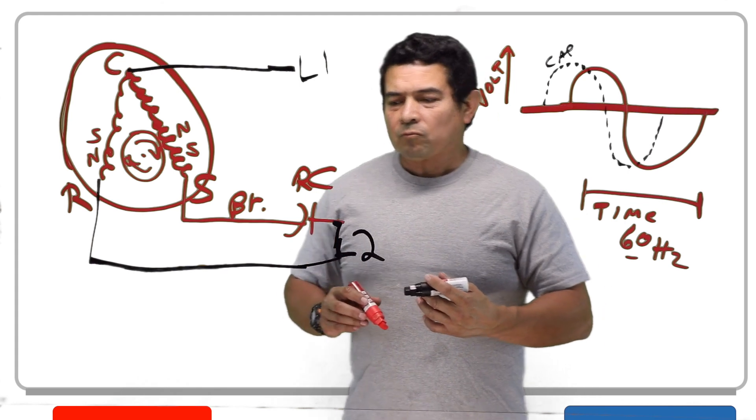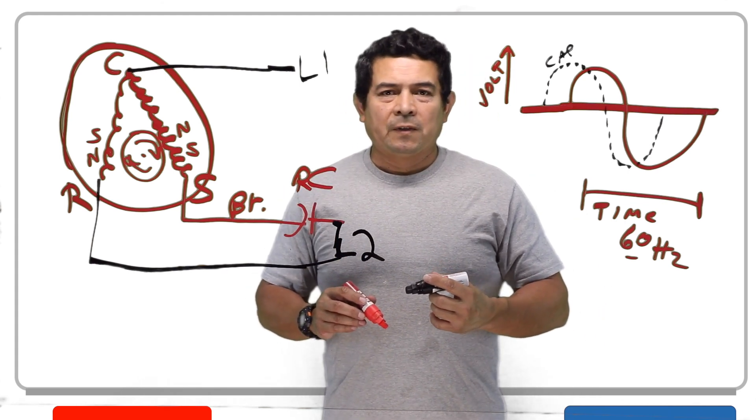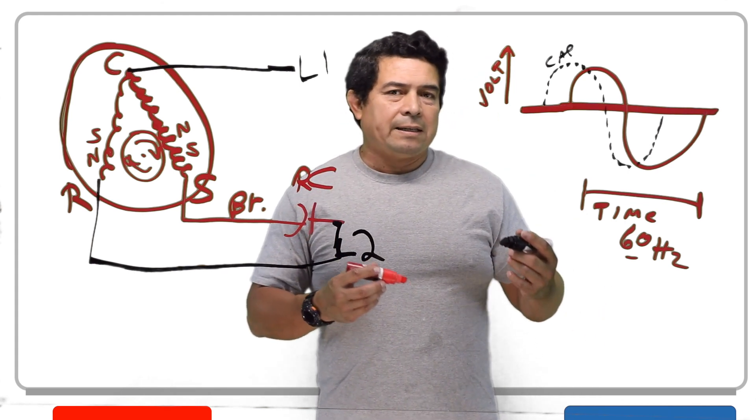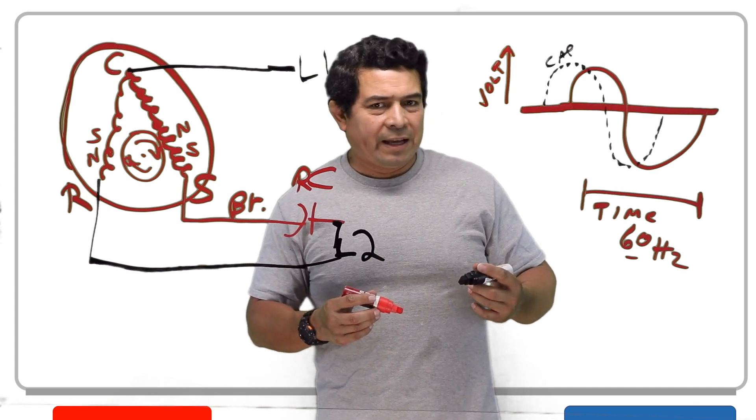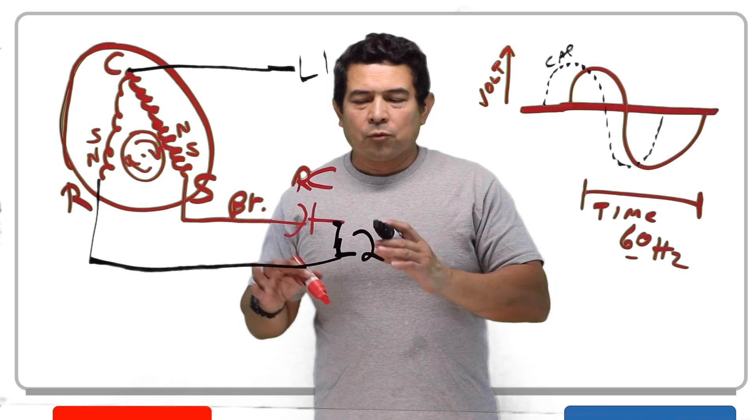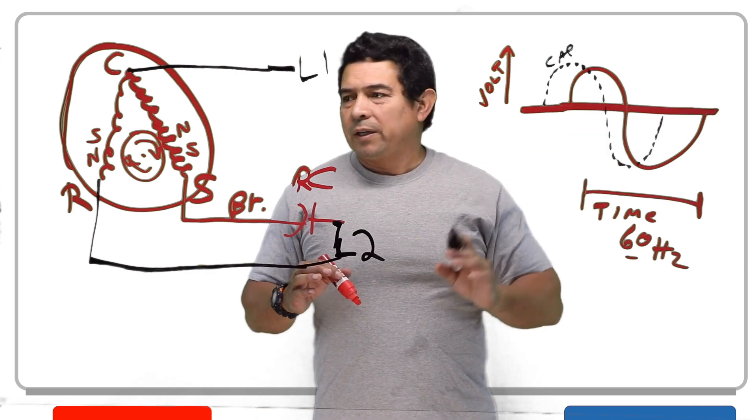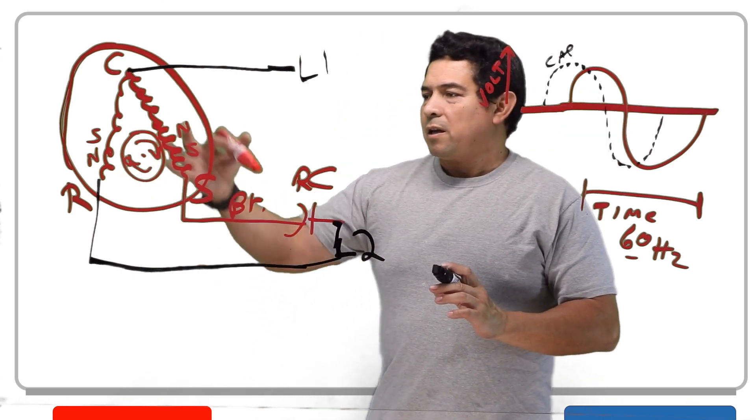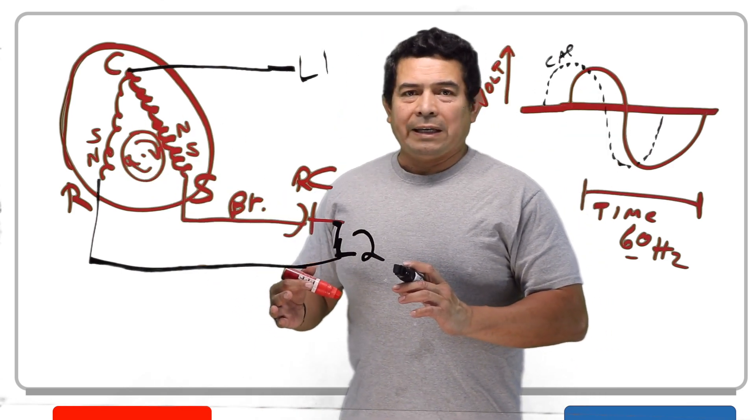Now, this is what they call a run capacitor. There is such a thing as a start capacitor. I'm going to talk about that in another video. But this is your run capacitor. That's basically what it does. This is what it's designed to do inside of the motor.